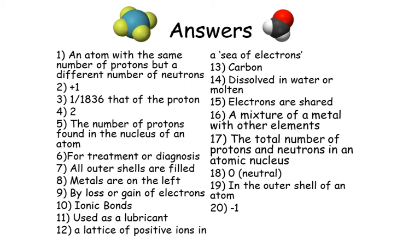Number twelve: a lattice of positive ions in a sea of electrons. Number thirteen: carbon. Number fourteen: dissolved in water or molten. Number fifteen: electrons are shared. Number sixteen: a mixture of a metal with other elements.